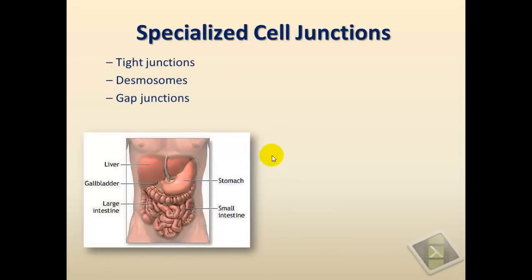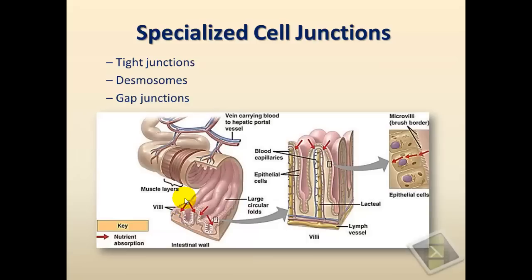The last topic is specialized cell junctions found in animal tissues. There are three main types: tight junctions, desmosomes, and gap junctions. To illustrate these, we use the example of the small intestine in the digestive system. Looking at the inner wall of the small intestine, we see folds called villi that increase surface area. Magnifying one villus reveals the cells that form the lining — and that is where these junctions are found.